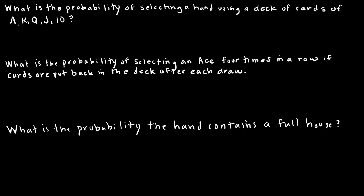Assuming we've all at least picked up a deck of cards before — if you haven't, there are 52 cards in a deck. There are four of each type of card, so four aces, four kings, etc., because there are four suits, and there are 13 cards in each suit. You won't need that last tidbit for this question, but it's good to know for any questions with decks of cards.